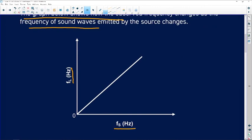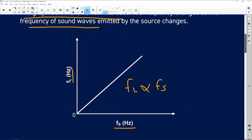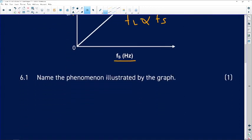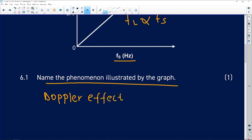And we can see from this graph that the frequency of the listener is directly proportional to the frequency of the source. That's what we can see here. Let's move to the questions. It says name the phenomenon illustrated by the graph. So for 6.1, we know this is Doppler effect. Our phenomenon here is Doppler effect.